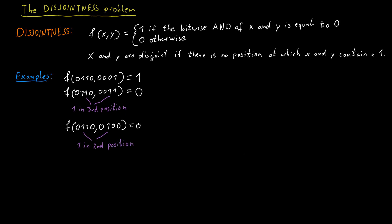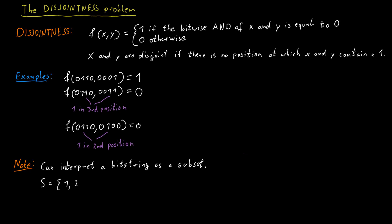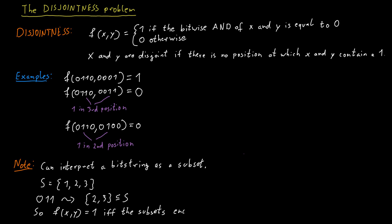The name disjointness comes from the idea that a bit string of length N can encode a subset of a set of N elements. For example, if I have a set of size three containing the numbers one, two, and three, then a bit string of length three can encode a subset of that set. The bit string 011 would encode the subset containing the second and third element but not the first, so it would be the subset {2, 3}. A zero corresponds to not including an element in the subset, and a one means we should include it. So the disjointness function simply asks whether the two subsets encoded by the two bit strings x and y are disjoint.